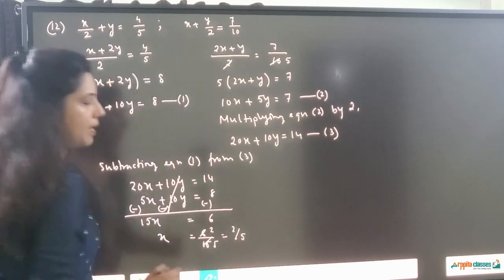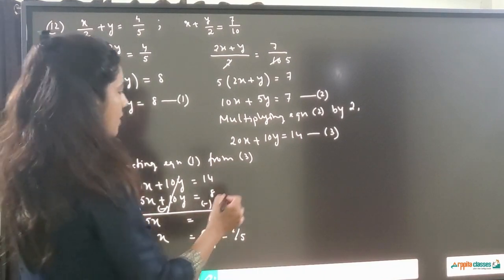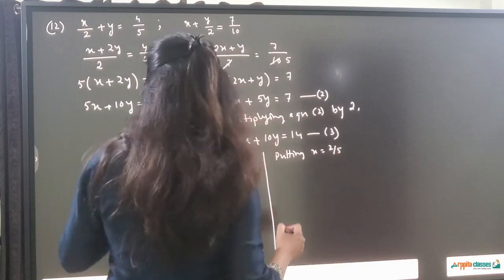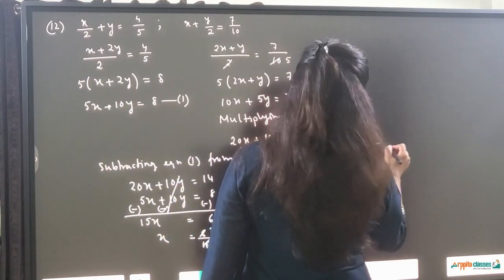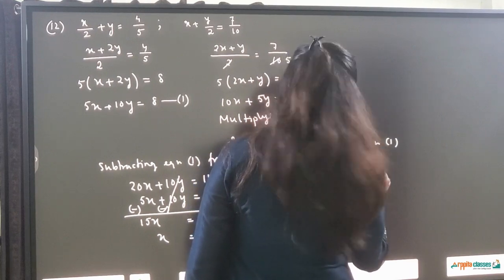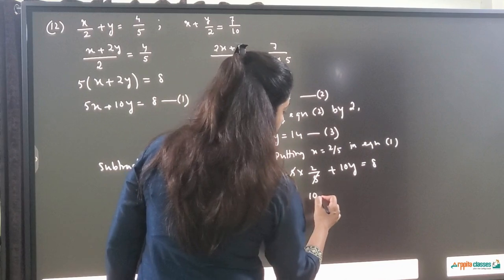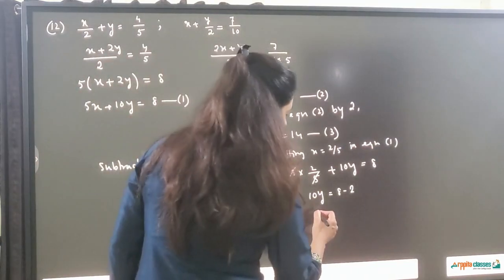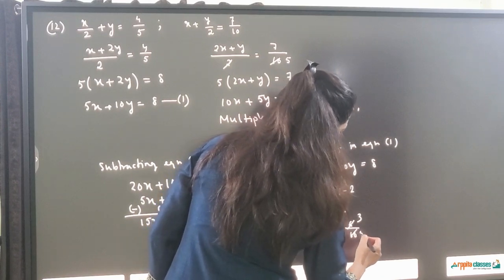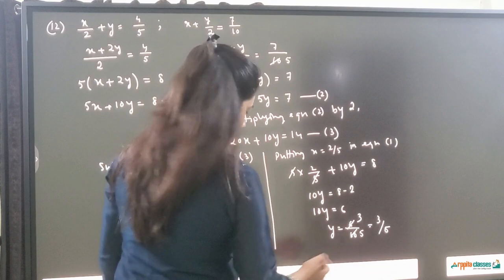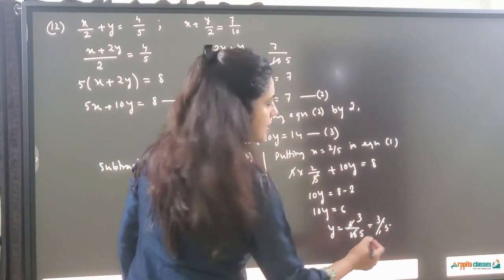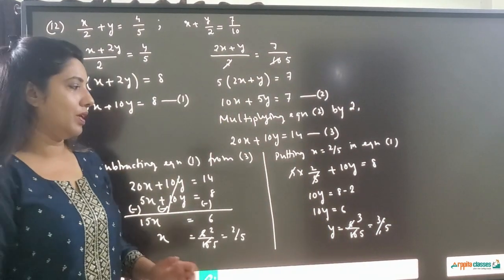So x equals 6 upon 15, which simplifies to 2 upon 5. Now putting x equal to 2 upon 5 in equation 1: 5 times (2 upon 5) plus 10y equals 8. The 5 and 5 cancel, so 2 plus 10y equals 8, giving 10y equals 6, and y equals 6 upon 10, which simplifies to 3 upon 5. So x is equal to 2 upon 5 and y is equal to 3 upon 5.